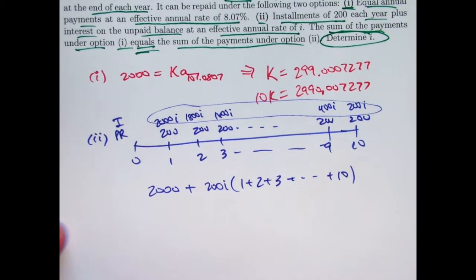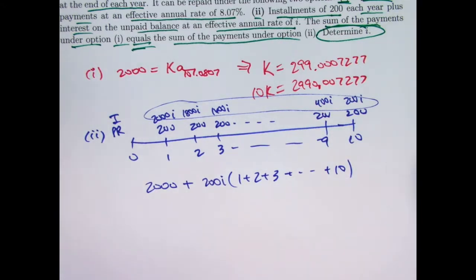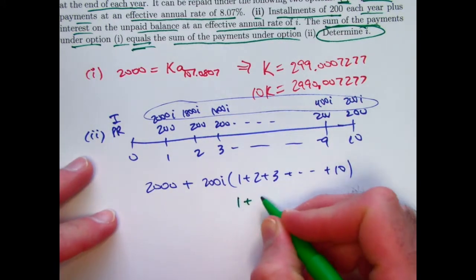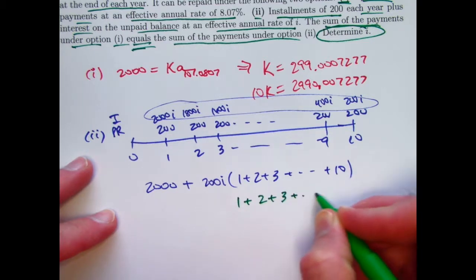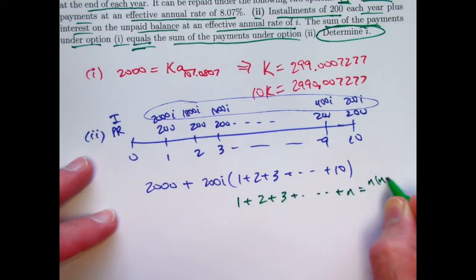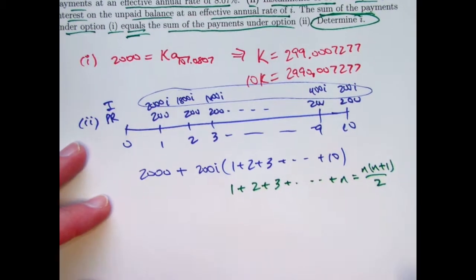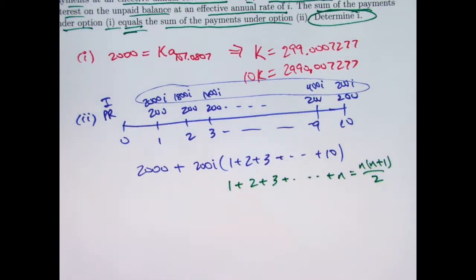You could certainly figure this out with your calculator, but I hope everybody knows who's watching this. You should know the formula for the sum of the first n integers to be n times n plus 1 over 2. It's not too hard to derive, and it's something really everybody should know.